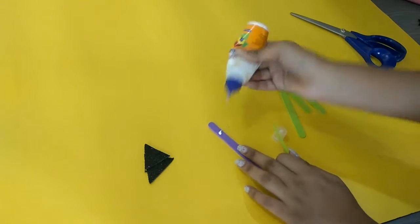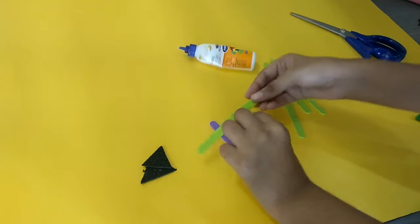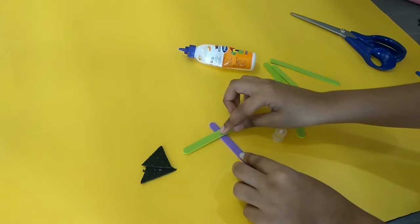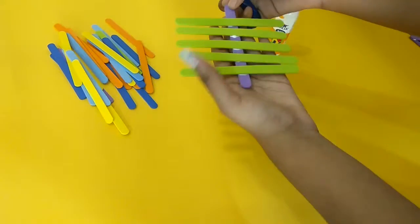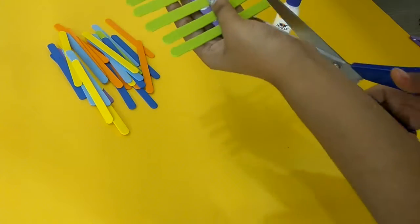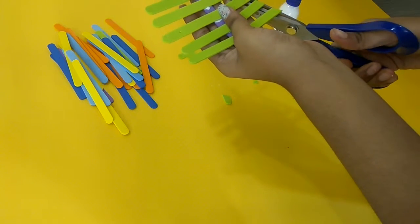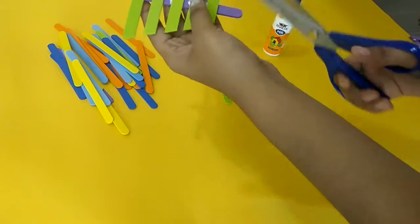You need to have popsicles or ice cream sticks, whatever you want. I am taking two colors and gluing it onto the other. Now once you're done with the gluing part, you need to cut it in the shape of a tree. Sorry, it's not in the frame but you will see it in a bit.